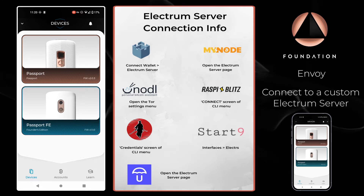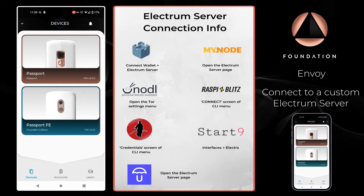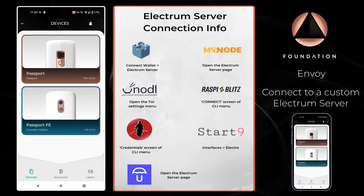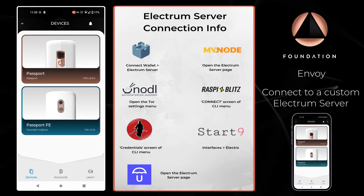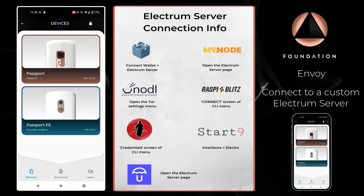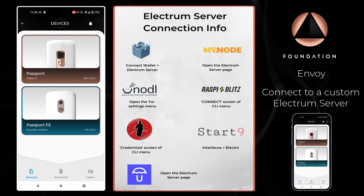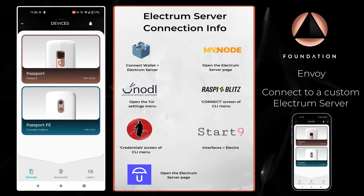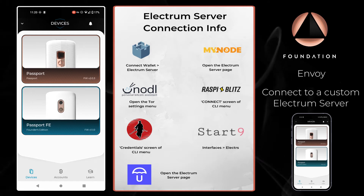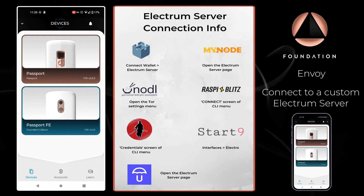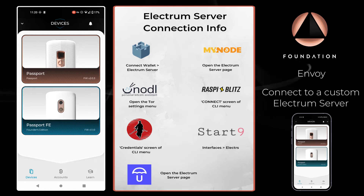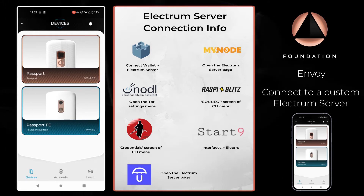Some will have a QR code that you can scan, whilst others will have a text string that you need to copy across to your phone. We built Envoy to try and interpret all of the common formats used by most node implementations.